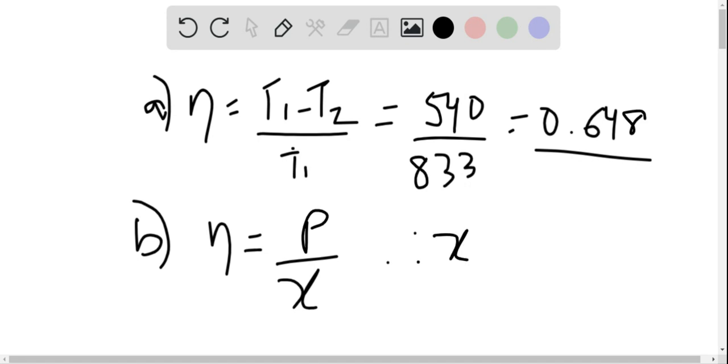Right? And therefore, our X is power, which is given as 1000 MW upon the efficiency, which we found from part A.